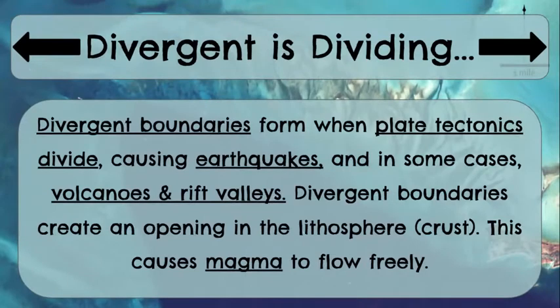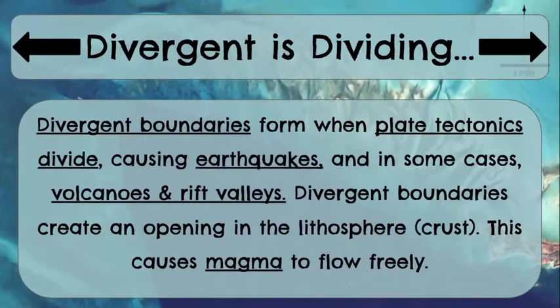Divergent is represented with arrows that are moving in opposite directions. One arrow will be going left, one will be going right, one is going up, one is going down. And divergent boundaries form when plate tectonics divide.